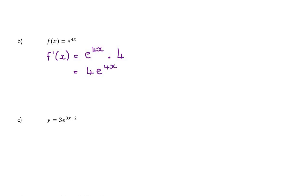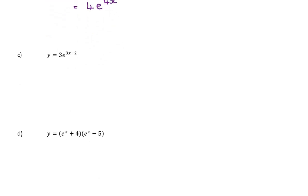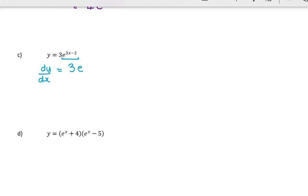Moving on, question c: dy/dx. Notice the 3 is just a coefficient, it's not a function of x, so I'm going to leave the 3. Differentiate e to the power of 3x minus 2 — so it's e to the power of 3x minus 2 — but I must multiply it by the derivative of the inside function, which is 3x minus 2, so that differentiates to 3. This gives 9e to the power of 3x minus 2.